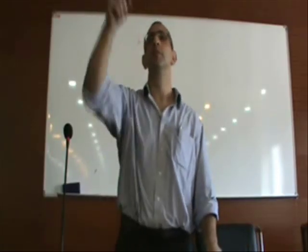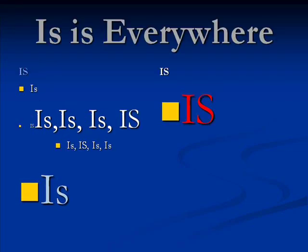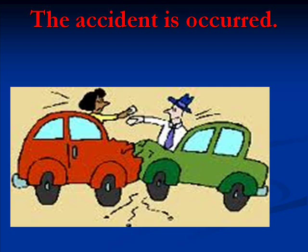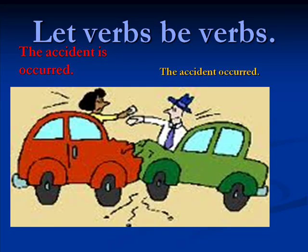So when they start learning English, they learn about the word 'is,' and then suddenly they start using it everywhere where it doesn't belong. One interesting phenomenon I see with students is they often just will not let verbs be verbs. 'The accident is occurred.' Well, 'occurred' is a perfectly good verb — you could just say 'the accident occurred in the forest.' But they start putting 'is' or 'are' — the verb 'to be' — everywhere.